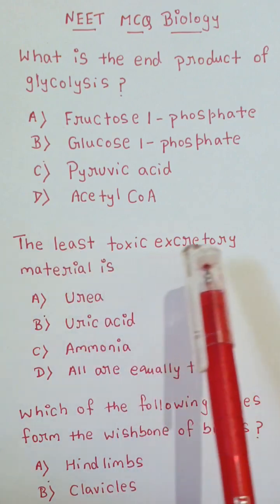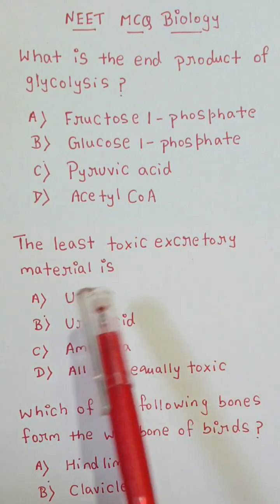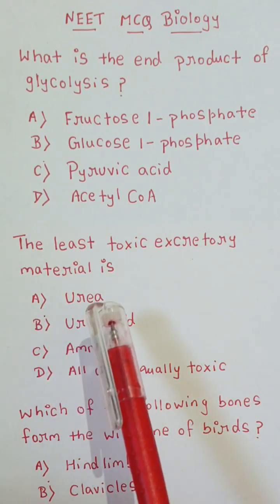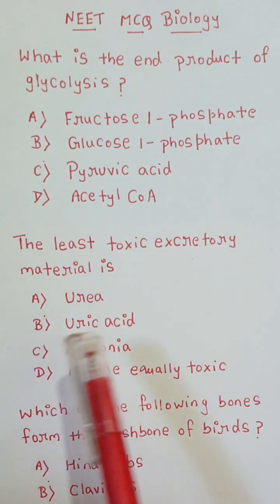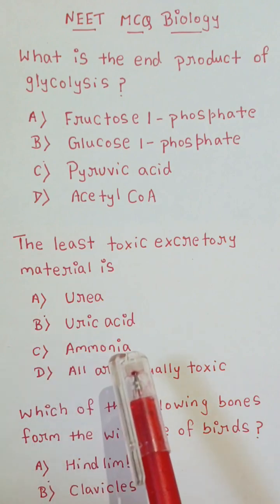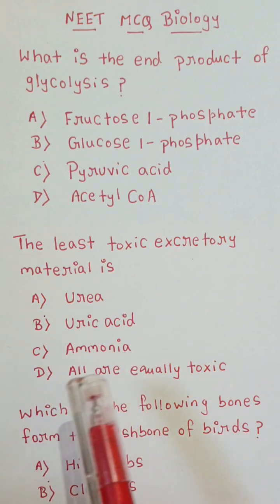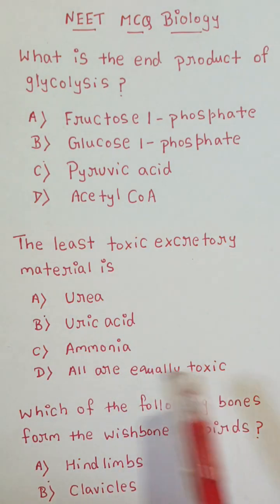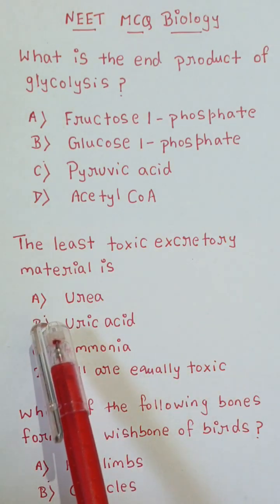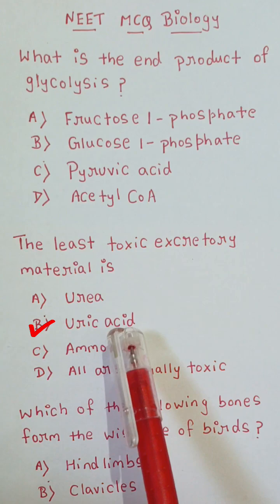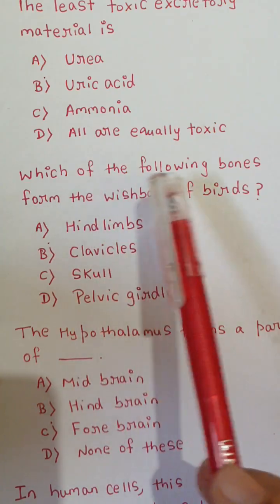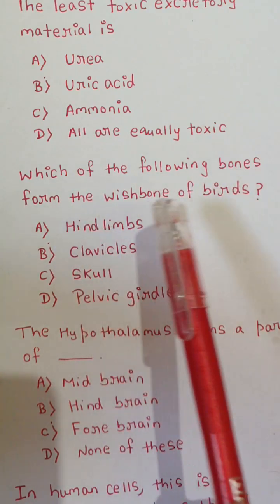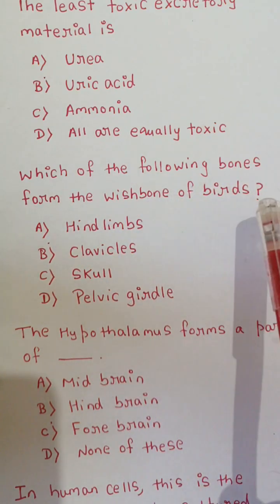The least toxic excretory material is: A) Urea, B) Uric acid, C) Ammonia, or D) All are equally toxic. The correct option is B: Uric acid.